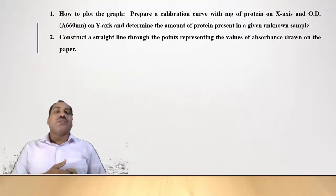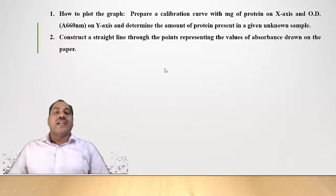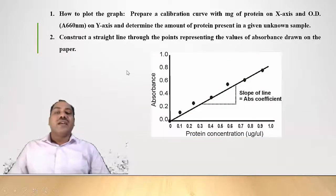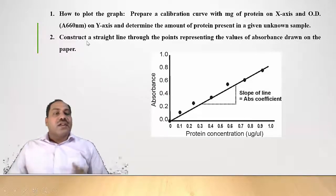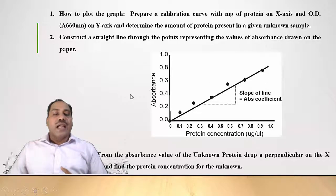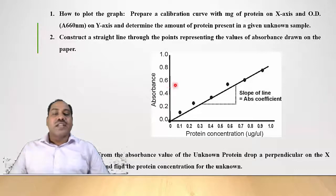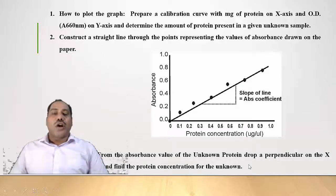After recording the absorbance values, plot a calibration graph with concentration of protein on the x-axis and absorbance on the y-axis. Construct a straight line through the plotted points. From this standard graph, the concentration of an unknown protein can be determined by drawing a perpendicular from the absorbance value to the x-axis.